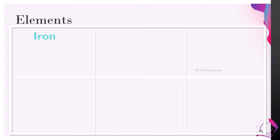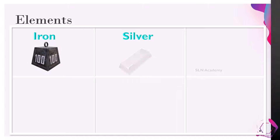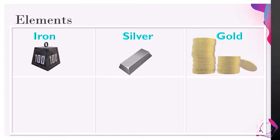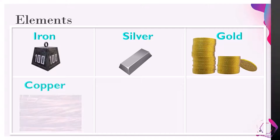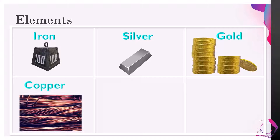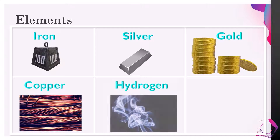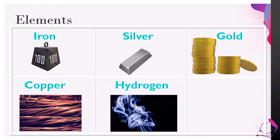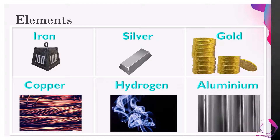Some examples of elements made up of the same kind of atoms are Iron, Silver, Gold, Copper, Hydrogen, Aluminium, etc.